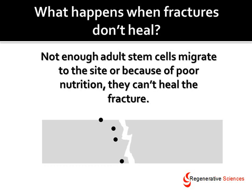What happens when fractures don't heal? Either not enough adult stem cells migrate to the site, or because of poor nutrition they can't heal the fracture. In this case, fewer stem cells go into the site — these are your own adult stem cells — and they're differentiating into bone-producing cells but there aren't enough of them to get the site to heal. That's a fracture nonunion, or in medical terminology, an inability to form a union or healing of the bone.